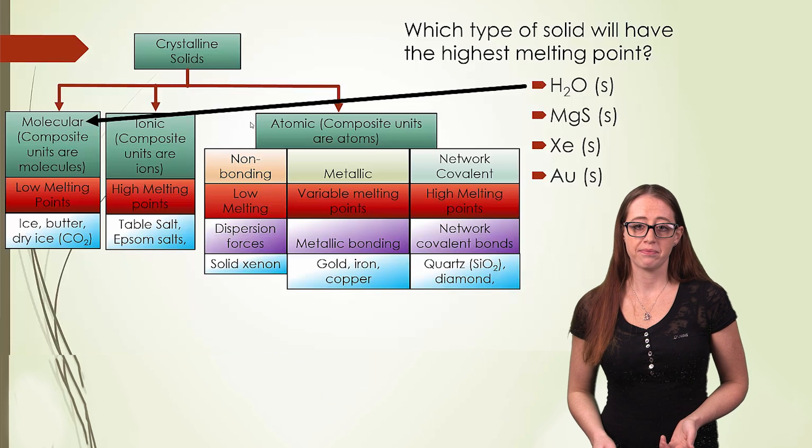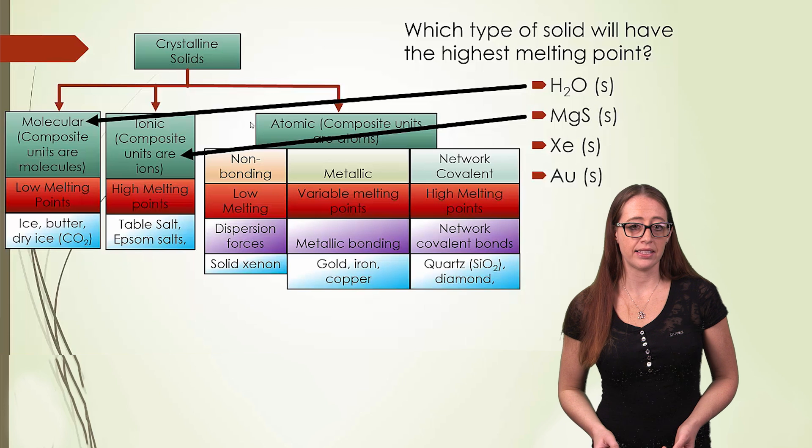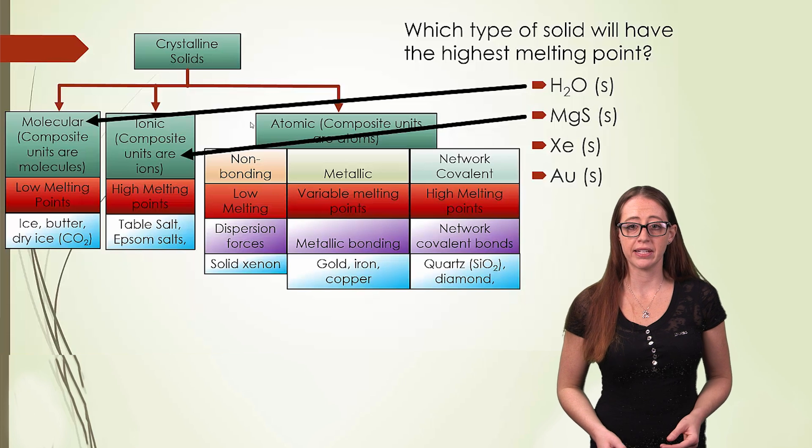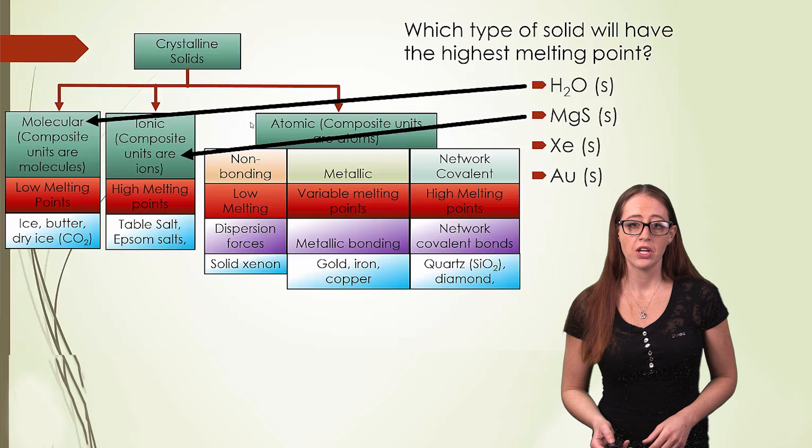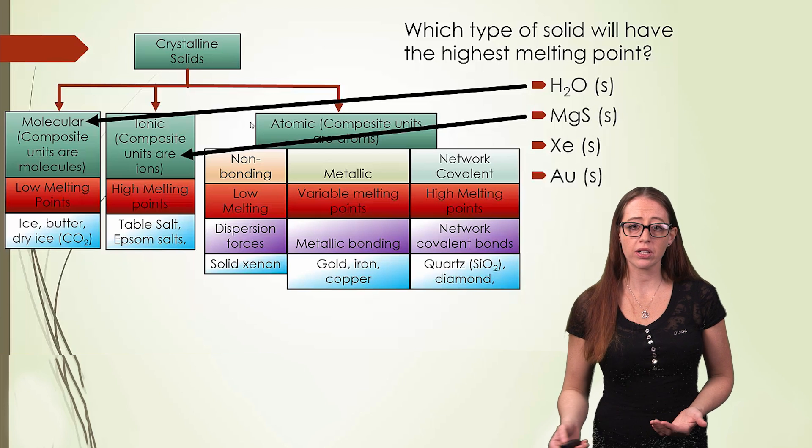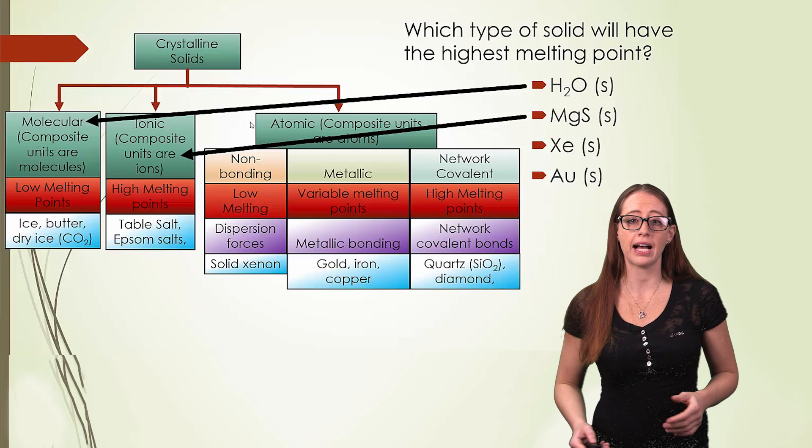Now we also have MgS. That's an ionic solid. These and network covalent solids are generally our two highest melting temperatures. So whenever you see ionic or network covalent, think really high melting temperatures.